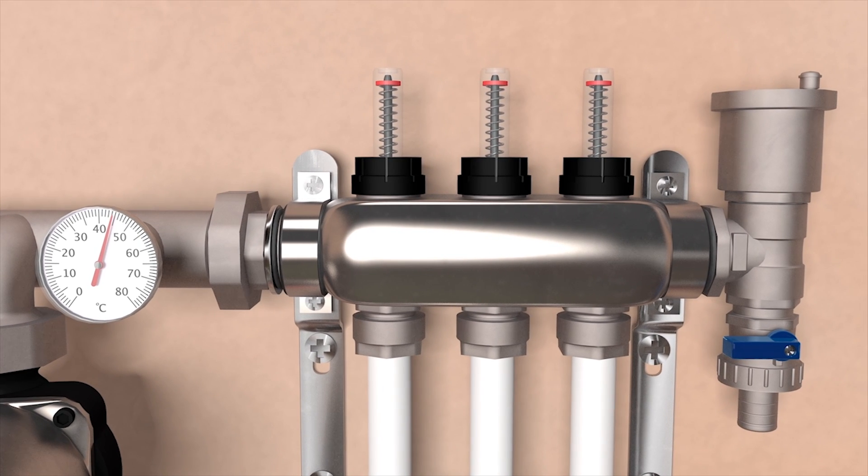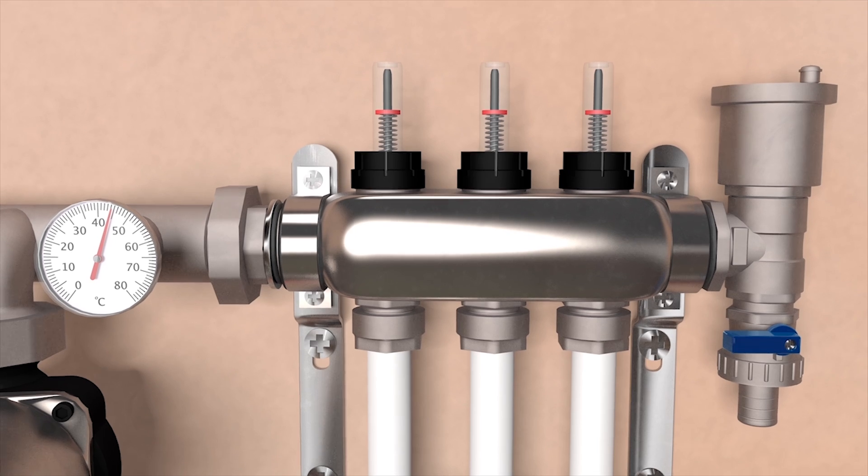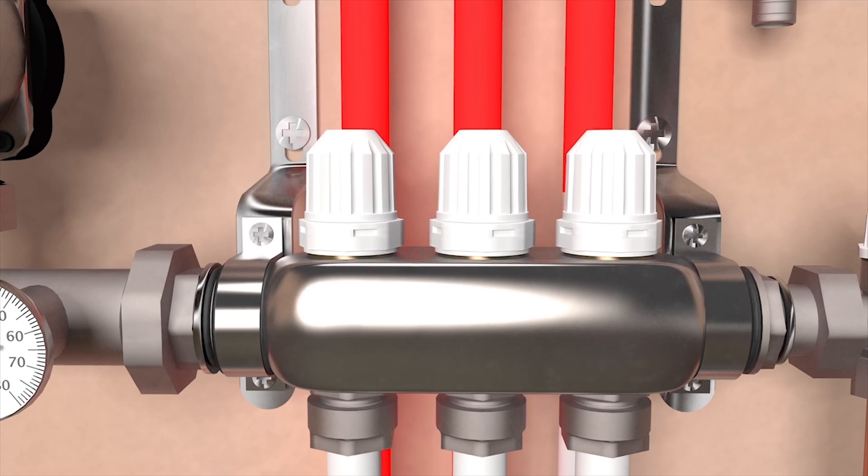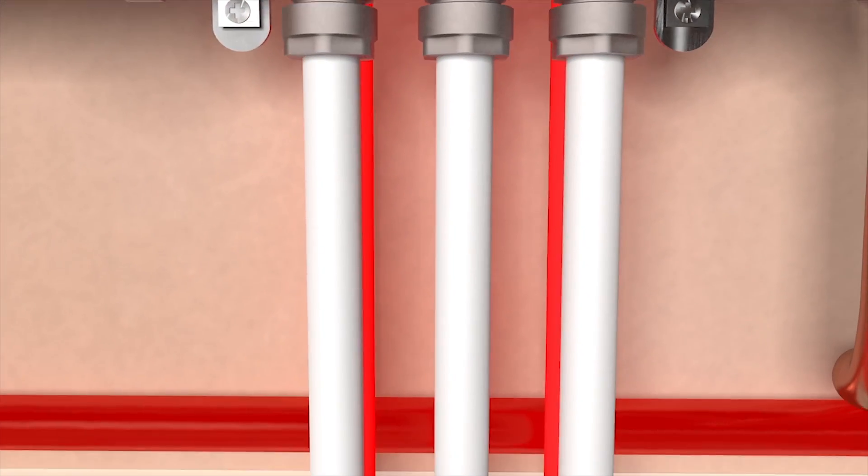Each pipe loop is regulated via a flow gauge. These flow gauges restrict or increase the flow of water going into each pipe loop. These are adjusted depending on the length of each individual pipe loop so that you have a balanced flow of water throughout your system.